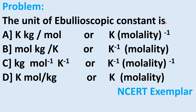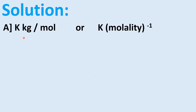The unit of the ebullioscopic constant is: option A Kelvin·kg per mole (or Kelvin per molality), option B mole·kg per Kelvin, option C kg per mole per Kelvin. You can work out the unit using the formula delta Tb = Kb × m, so Kb = delta Tb / m. Since the unit of delta Tb is Kelvin and molality is mol/kg, the unit is Kelvin·kg per mole, or Kelvin per molality.